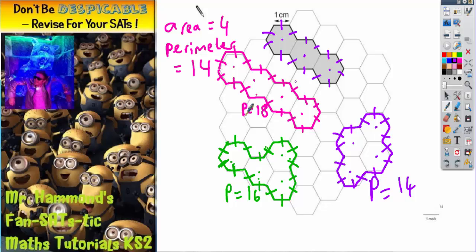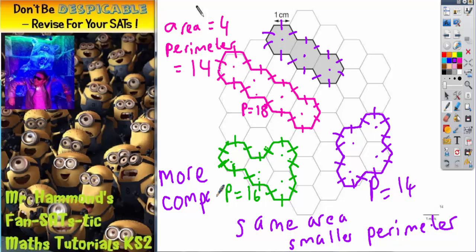Just to recap on what we're saying: if you're looking to do a shape that has the same area but smaller perimeter, you need to try and draw the shape more compact. Because when it's more compact it will end up having a smaller perimeter.